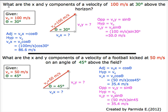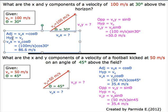In this question, we are given the initial velocity, v naught, which is equal to 100 meters per second, marked in red, and theta, which is 30 degrees, marked in green.